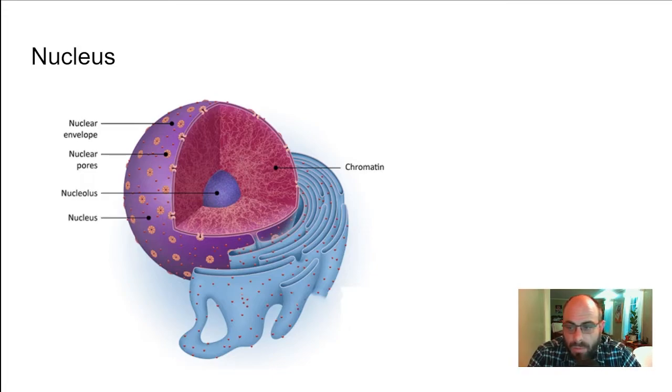A couple other things to talk about with the nucleus. First is the nuclear envelope—the membrane around the nucleus. It separates the nucleus from the rest of the cell, protects the DNA and everything that's in the nucleus from the cytoplasm. Cytoplasm is a dangerous place, got to be careful out there. Nuclear pores allow the transport of materials in and out of the nucleus.